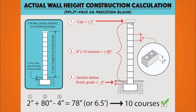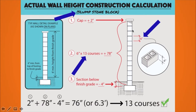If you consider removing a course, you'd be taking away eight inches, putting you under six feet — so it wouldn't work. Ten courses is the minimum for precision or split face block to fulfill a six-foot wall. For slump stone block, the difference is that each block is six inches high instead of eight. That means you need more courses — 13 courses. Six inches times 13 courses equals 78 inches, minus four inches below grade, plus two inches for the cap gives you 76 inches or 6.3 feet. So 13 courses is the minimum for slump stone to meet the six-foot height requirement.